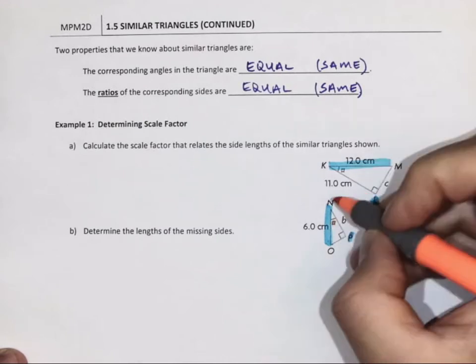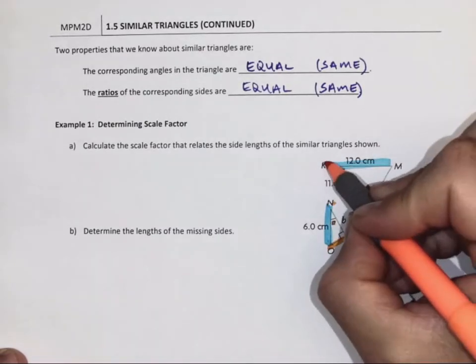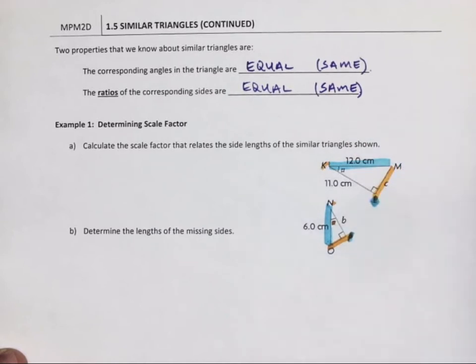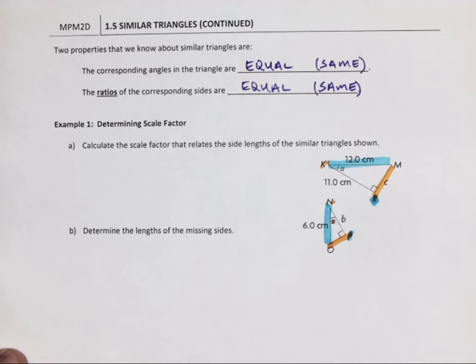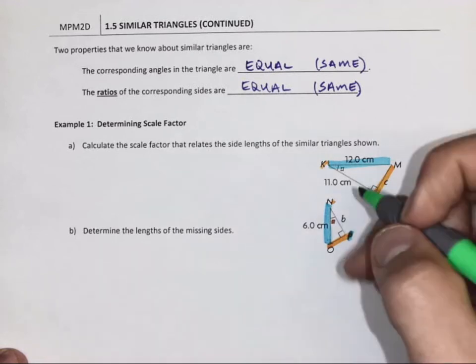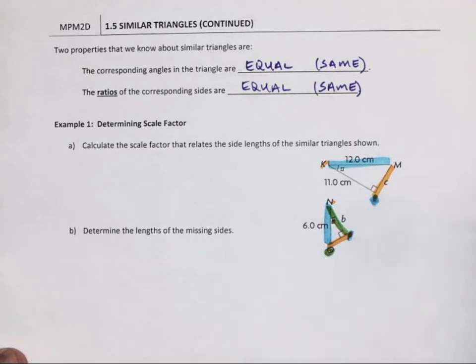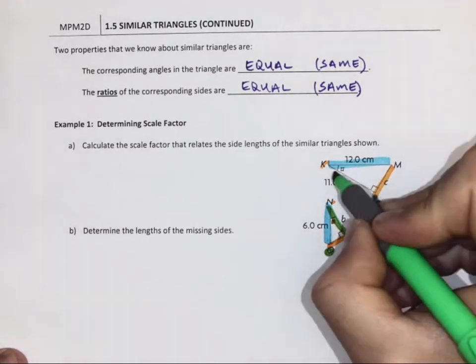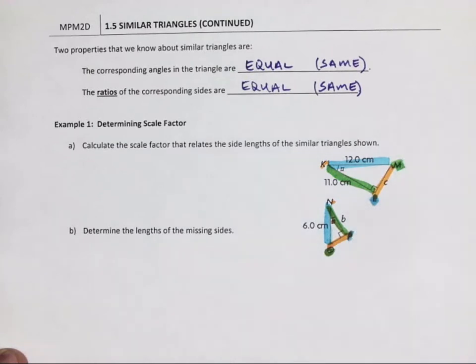I have one angle given. N matches up with OP. K matches up with ML, which they've labeled C. Which remains the last side, side B on the smaller triangle, which matches up with Vertice O. Actually corresponds to 11 cm side M or Vertice M.